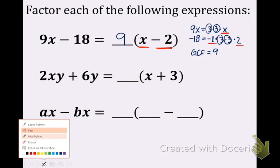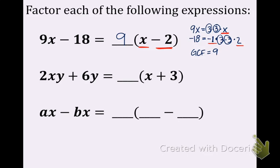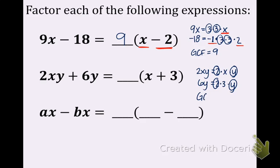For 2xy plus 6y, writing the factors: 2xy is 2 times x times y, and 6y is 2 times 3 times y. Circling the like terms, we have a 2 and a y in common, so the GCF is 2y. That goes in front. What's left over? x is left over and 3 is left over, so the factored form is 2y times the quantity x plus 3.